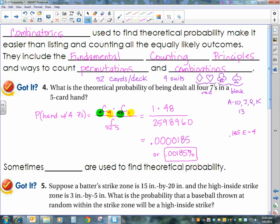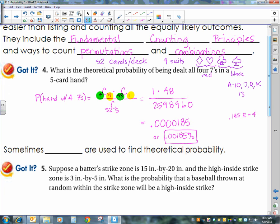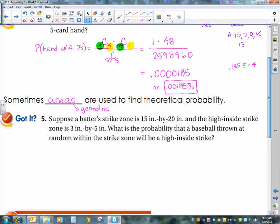Now, the last method of probability that we want to talk about is what we refer to as a geometric probability because we use the area. So sometimes areas are used to find theoretical probability. As I said, this is referred to sometimes as geometric probability.